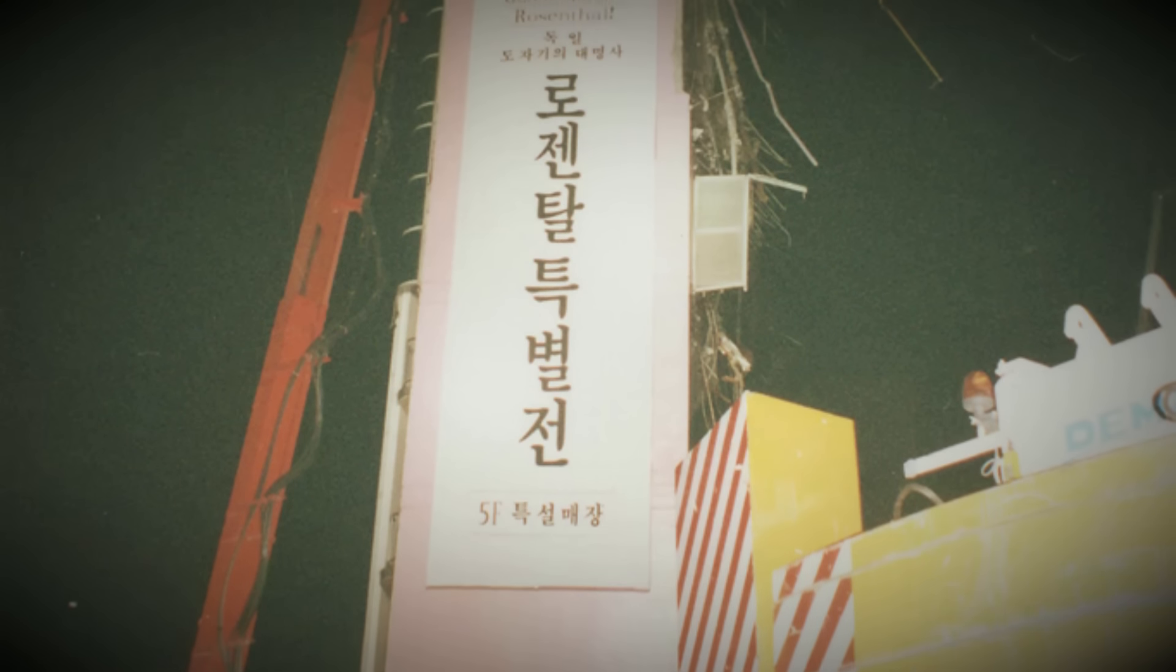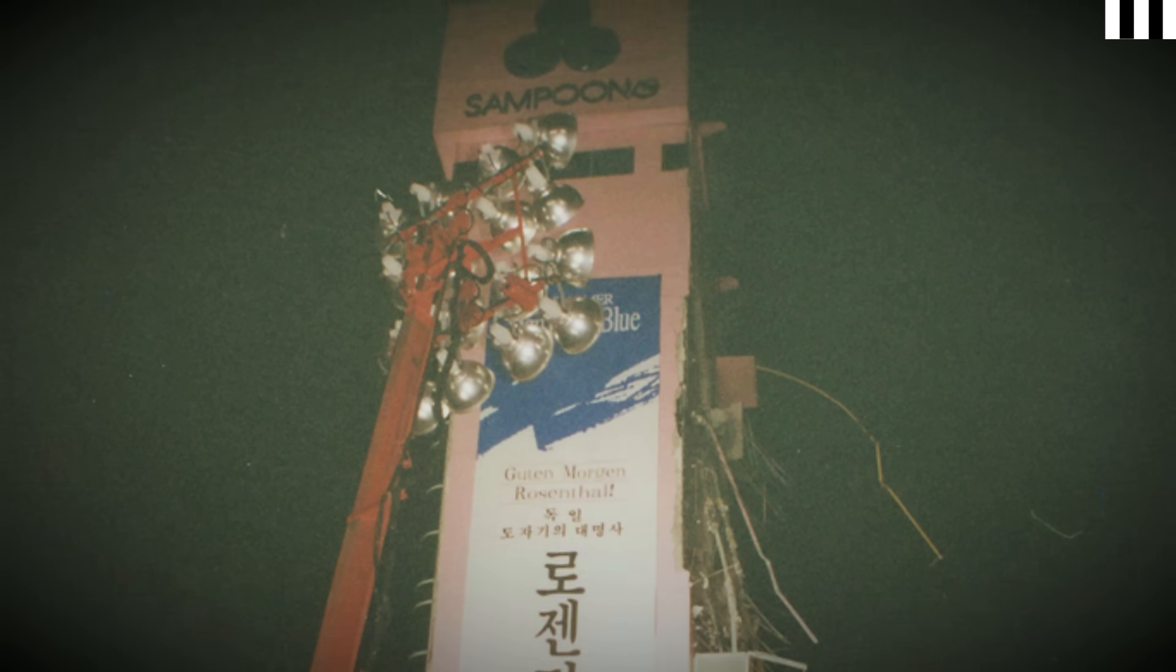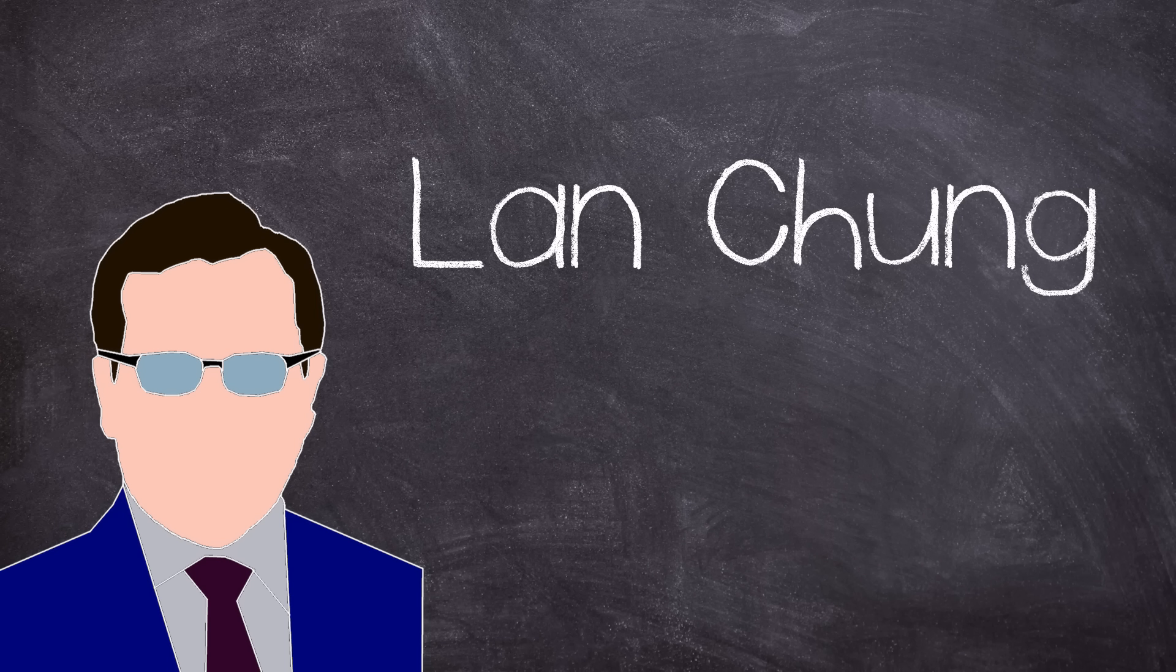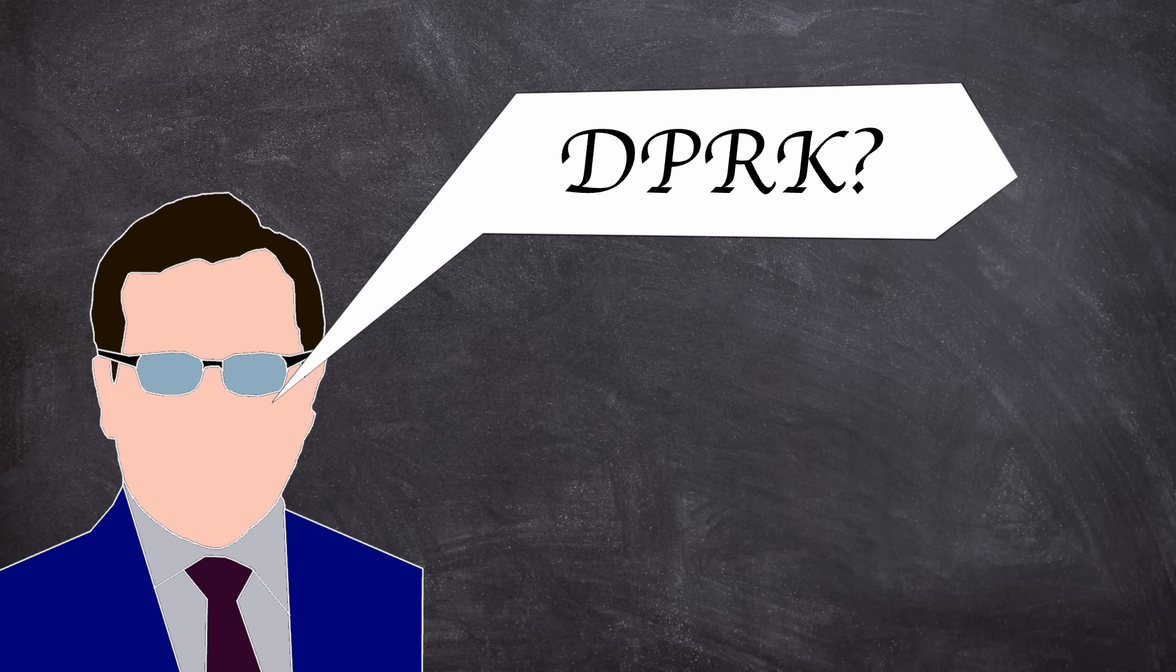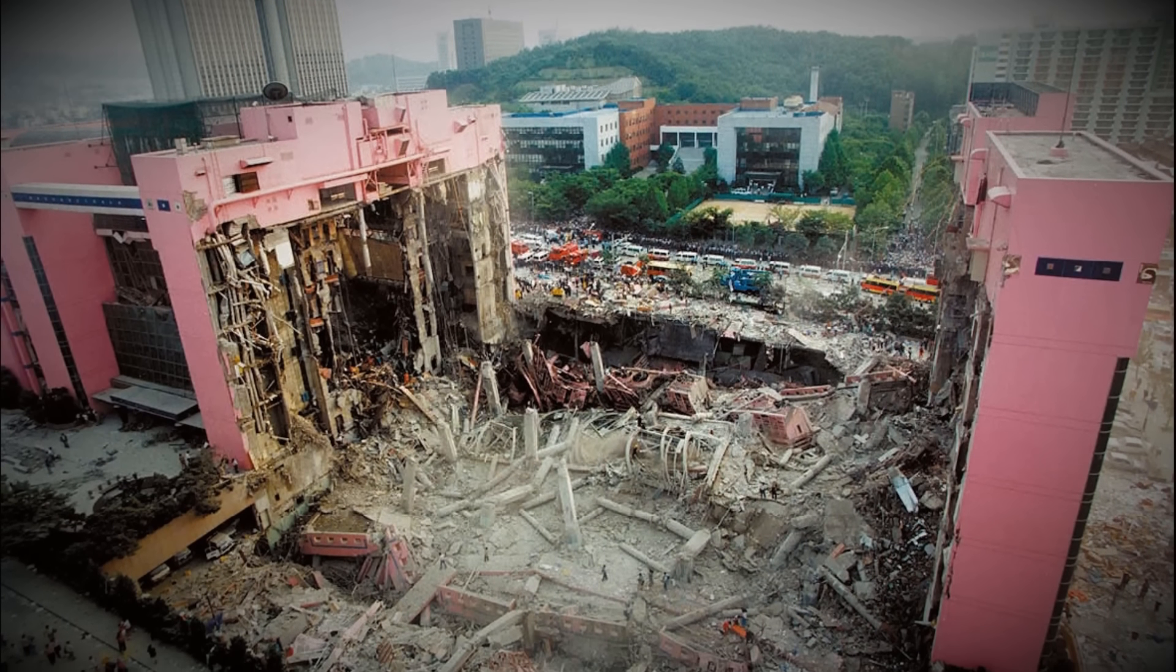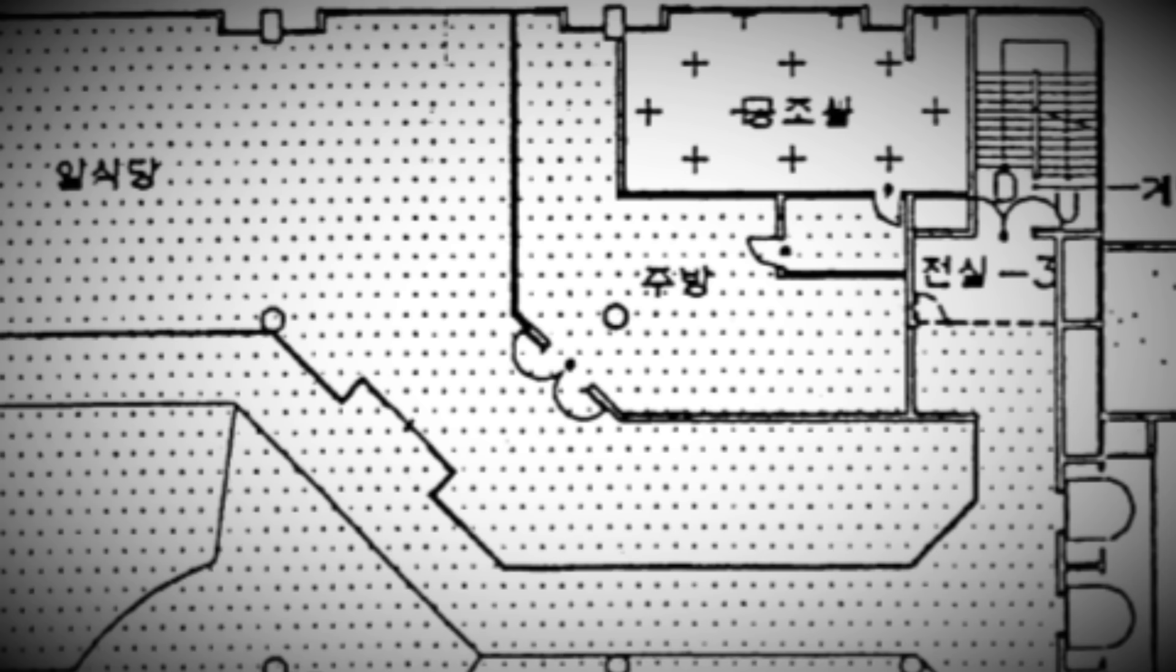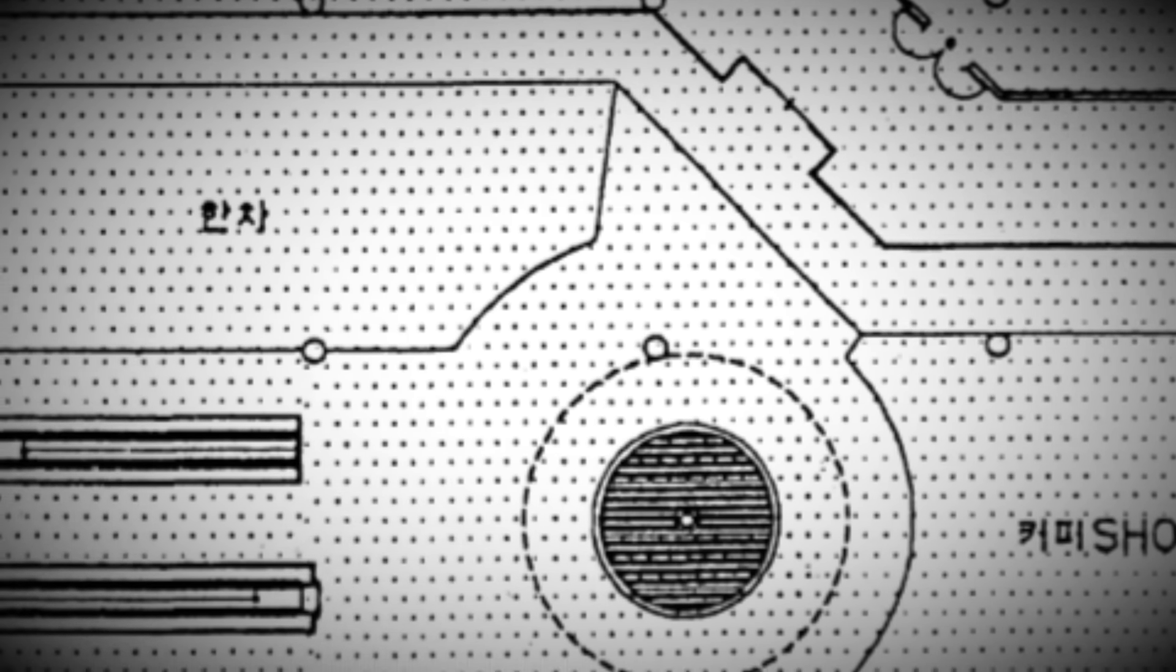As such an investigation panel was set up to find out how the Sampoong department store collapsed and who was to blame. Professor Ahn Chung from Dankook University's engineering school was chosen to head up the investigation. Initially a gas explosion was thought to be the culprit, even more worrying was the prospect of a terrorist attack. Although the pancaking collapse with little debris ejected suggested the failure was more due to structural issues.